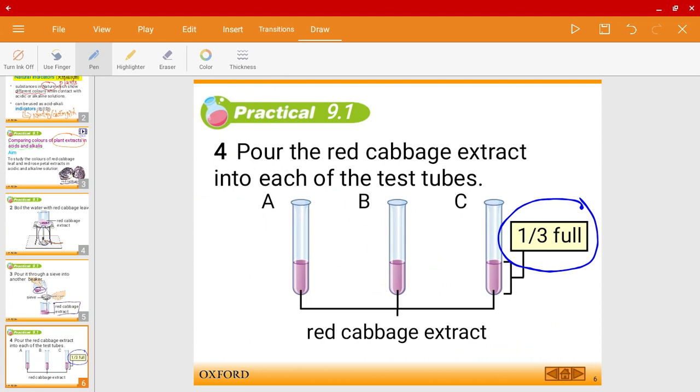Okay, so in test tube A, we'll be also pouring water. In test tube B, we'll be pouring in acid. And in test tube C, we will pour in an alkali.